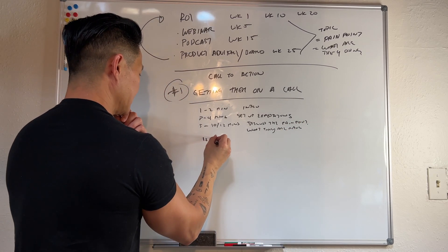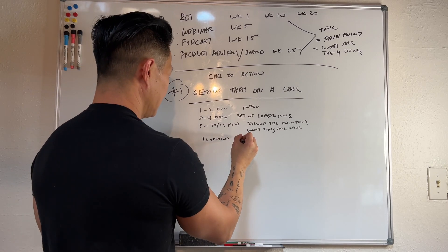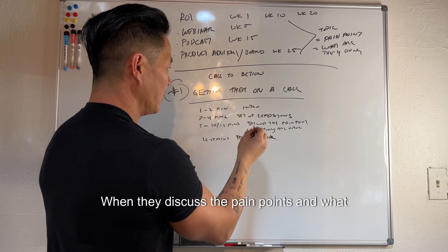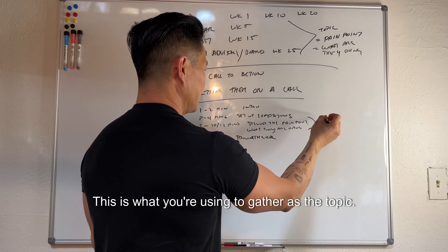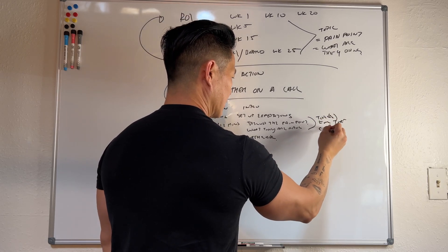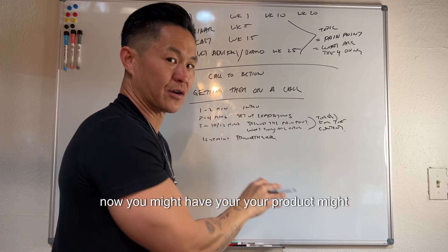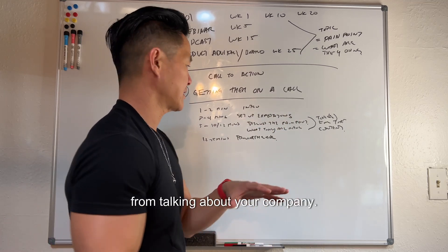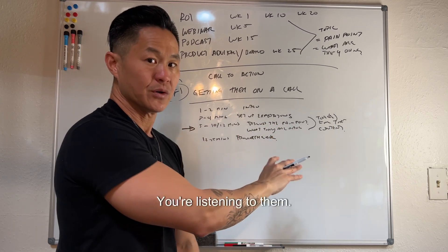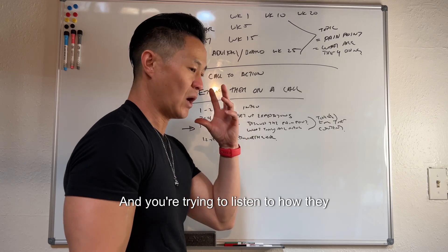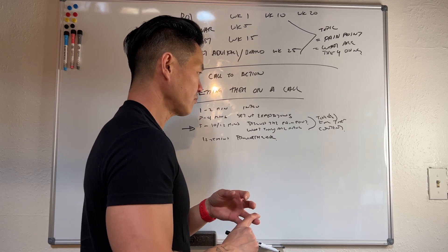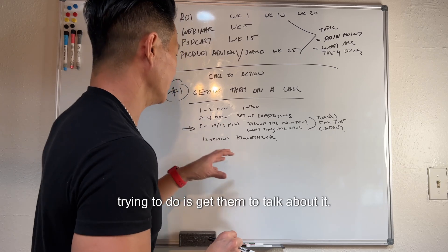In that twelve to fifteen minute block, you're providing the ask. When they discuss the pain points and what they're doing about it, you're using that to gather the topic for the content. Now, your product might be solving for a lot of what they're talking about - but you need to withhold from talking about your company or solution at this point. You're listening. You're listening to how they talk about the pain and what they're currently doing, whether it's a competitor, a manual process, or no solution. All you're trying to do is get them to talk about it.